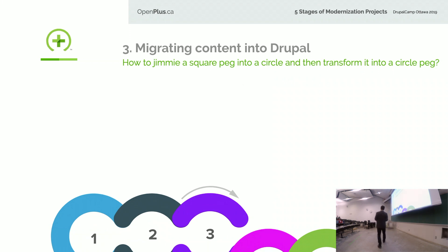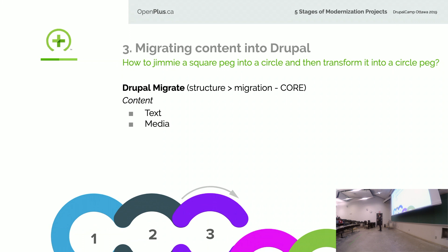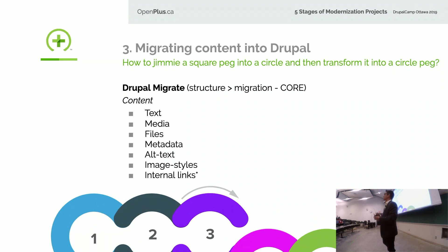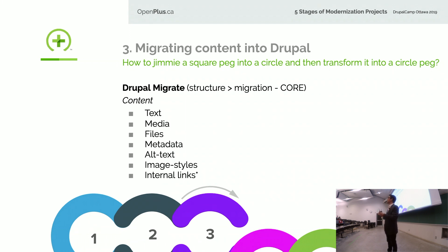Drupal has this great tool called Migrate, and Drupal Migrate is amazing because it does a lot of things you would have to do manually. These are all the things you'd somehow have to do manually — copy and paste the text, download files, handle alt text. But the biggest thing is internal links. You've got all these links that link to some other page on your website, and your new website's path structure is completely different. Imagine the amount of effort you've got to go to, to find all the target pages and then change all your content to make sure you don't have any 404s. That is a monumental task.